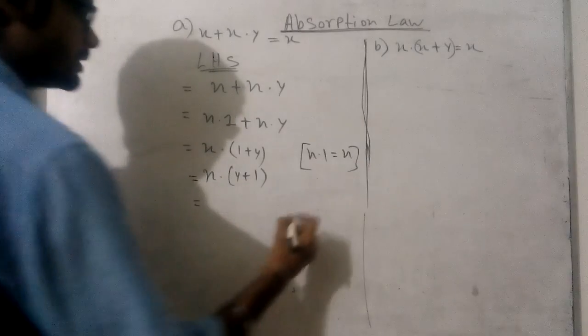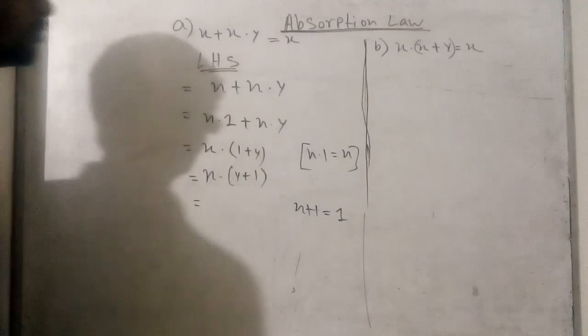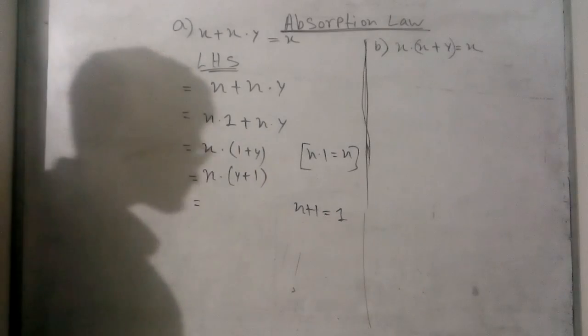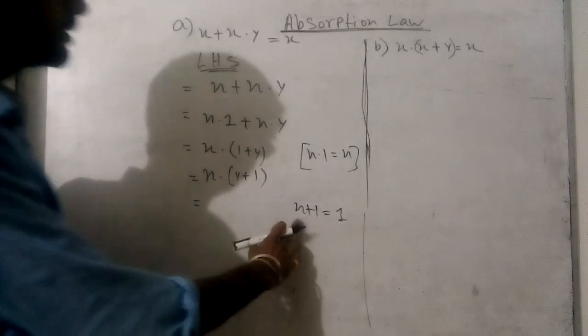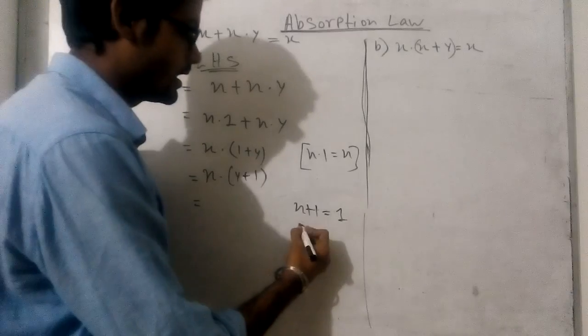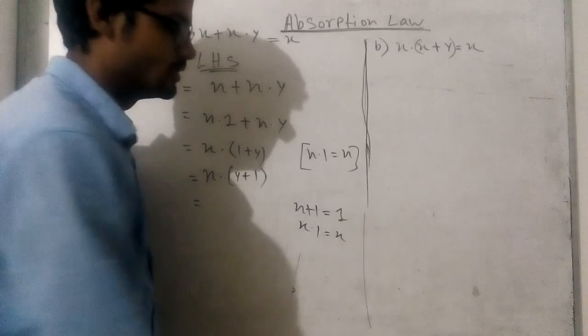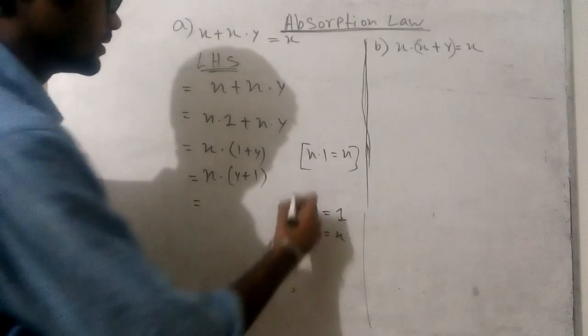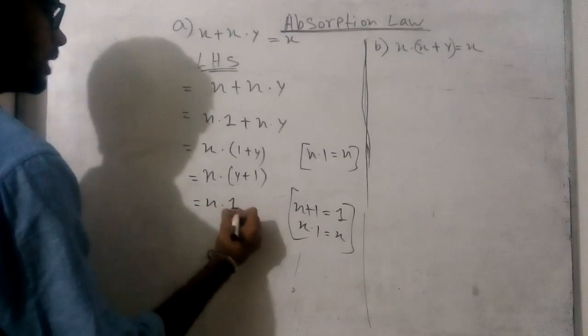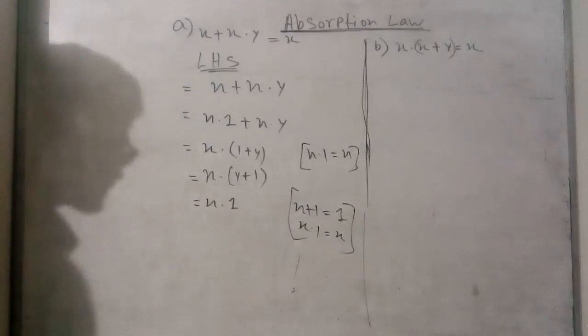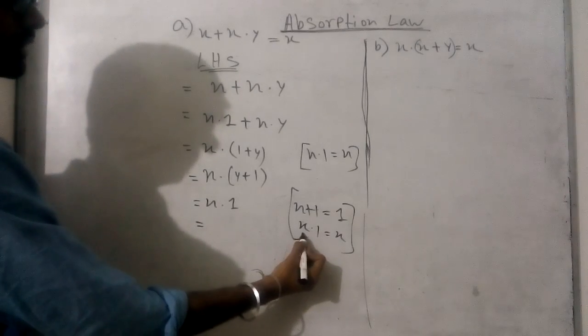Now we know that any variable plus 1 equals 1, and any variable into 1 equals the variable. So we can write x into 1, because y plus 1 is 1. Now from this we know x·1 equals x.